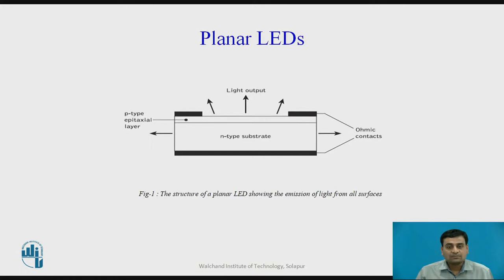The first LED structure is the planar LED, which is the simplest available. It is fabricated by either liquid or vapor phase epitaxial processes over the whole surface of a gallium arsenide substrate, involving a p-type diffusion into an n-type substrate to create the junction. Forward current flows through the junction, giving Lambertian spontaneous emission, and the device emits light from all surfaces. However, only a limited amount of light escapes due to total internal reflection, resulting in low radiance and non-intense emission.